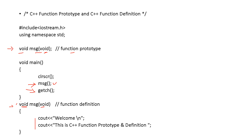This is very simple and we have already discussed this. Just focus on the term function prototype — it provides the return type, name of the function, and parameter list. That's all. Hope it is clear for you. Thank you.